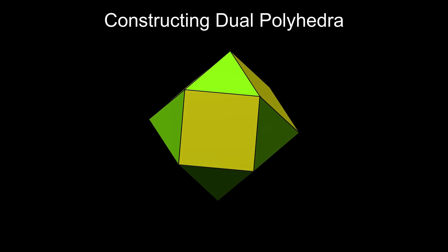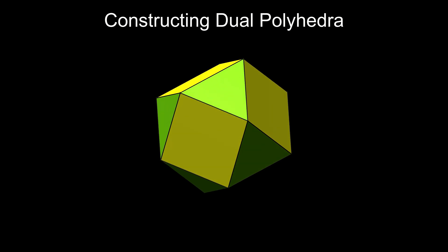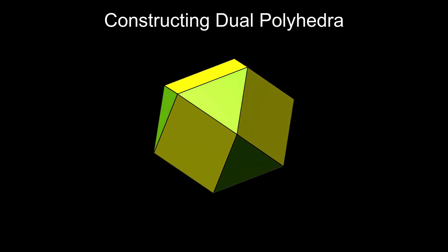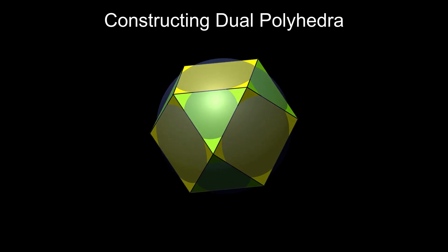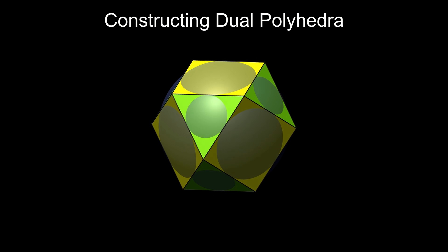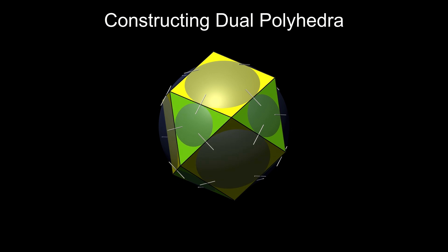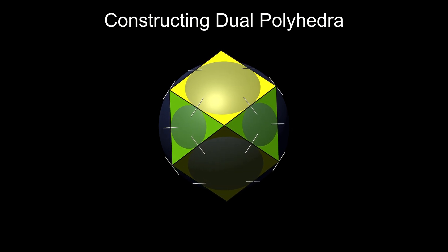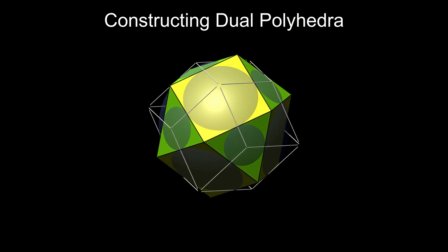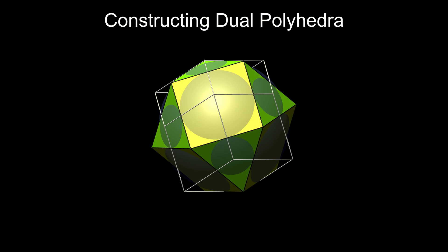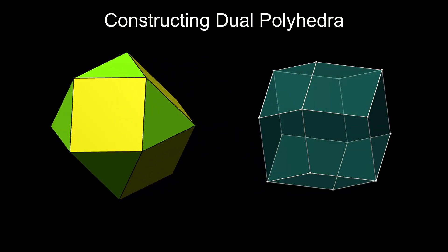There is a standard way of creating dual polyhedra known as spherical inversion. Given a uniform polyhedron, such as this cuboctahedron, first draw a sphere around it, then shrink the sphere slightly so it just touches every edge. Now draw tangents to the sphere perpendicular to the polyhedron's edges. These will become the edges of the dual polyhedron. Extend these tangents until they meet above each face, forming the dual vertices. Finally, fill in the faces to create the dual polyhedron.